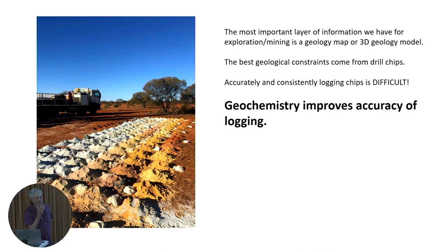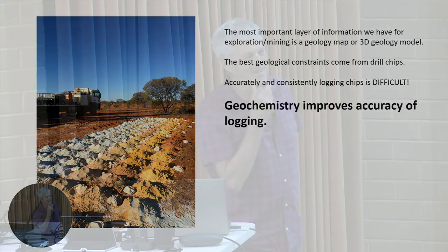I reckon my logging is pretty good, and I reckon if I'm logging chips like this, if I'm lucky I'll get it right maybe 60% of the time. If you think you're good at logging chips visually, get over the ego. You need to get four-acid digest ICP-MS on your bottom-of-hole air core chips, maybe one in ten down an RC hole, and some good geochemistry out of your diamond holes as well, because it turns out we're not that good at logging lithologies.